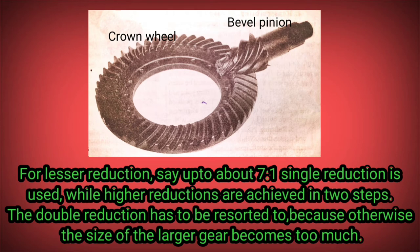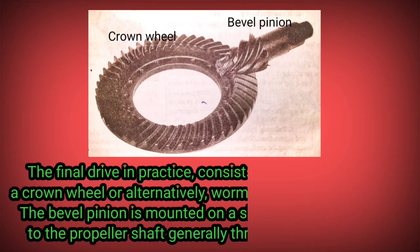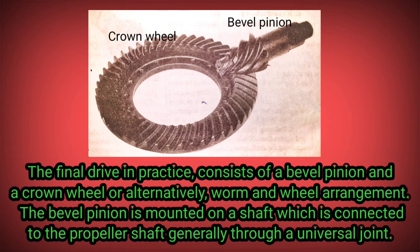For lesser reduction, say up to about 7 to 1, single reduction is used, while higher reductions are achieved in two steps. The double reduction has to be resorted to because otherwise the size of the larger gear becomes too much. The final drive in practice consists of a bevel pinion and a crown wheel, or alternatively a worm and wheel arrangement.